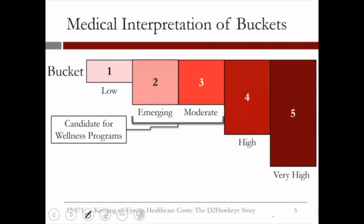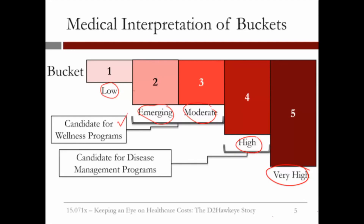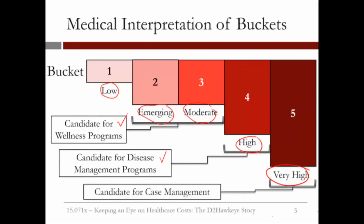Interpreting the buckets medically, they represent various levels of risk. Bucket 1 consists of patients with rather low risk. Bucket 2 has what is called emerging risk, and bucket 3 a moderate level of risk. Bucket 4 is high risk, and bucket 5 very high risk. From a medical perspective, buckets 2 and 3 — the emerging and moderate risk patients — are candidates for wellness programs, bucket 4 high-risk patients for disease management programs, and bucket 5 very high-risk patients for case management.